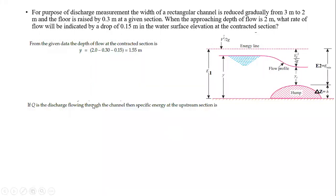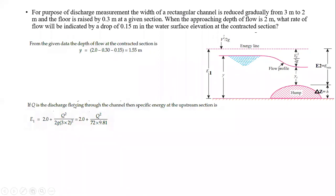If Q is the discharge, the specific energy at the upstream section is E₁ = y + V²/(2g). Substituting, E₁ = y₁ + V₁²/(2g). Since V = q/A and V² = Q²/A², with A = b × y = 3 × 2, we get E₁ = 2 + Q²/(2g × (3×2)²) = 2 + Q²/(72 × 9.81).